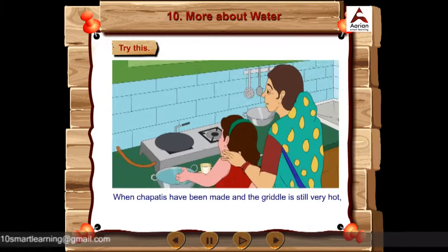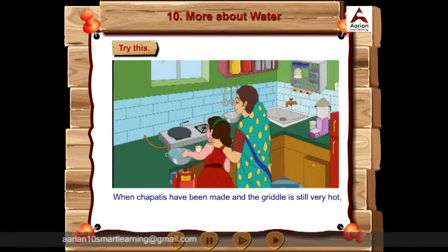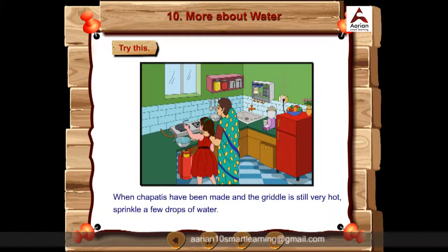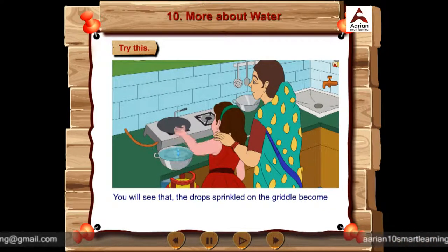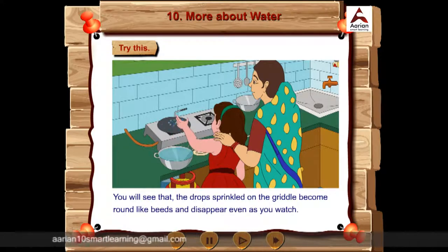When chapatis have been made and the griddle is still very hot, sprinkle a few drops of water. You will see that the drops sprinkled on the griddle become round like beads and disappear.